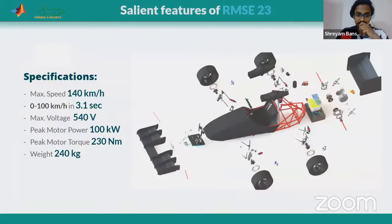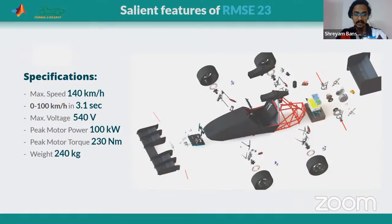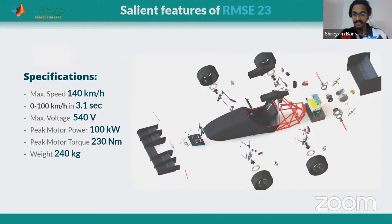We are a multidisciplinary student team involved in designing, fabrication, and testing of a formula-style race vehicle. We have manufactured a vehicle called RMSE 23 and taken it to different competitions including Formula Bharat Virtuals, Formula Bharat 23, and recently Formula Student UK, where we were in the top three among all Asian teams and were recognized for one of the best cost reports presented to the judges. Our RMSE 23 has a weight of 240 kg, and in the next design we are targeting 220 kg.